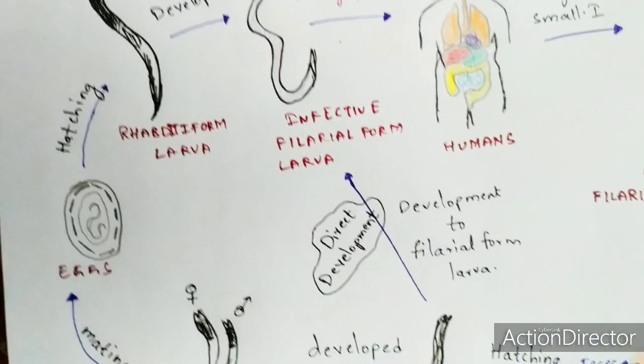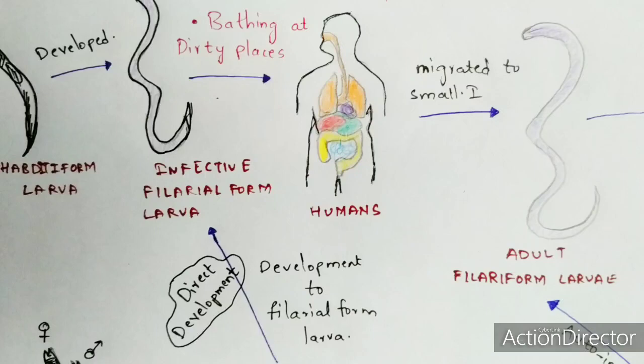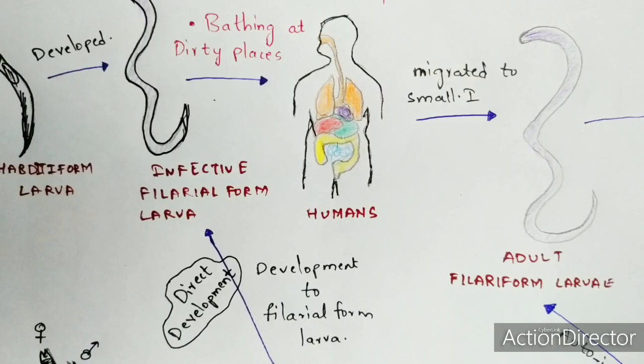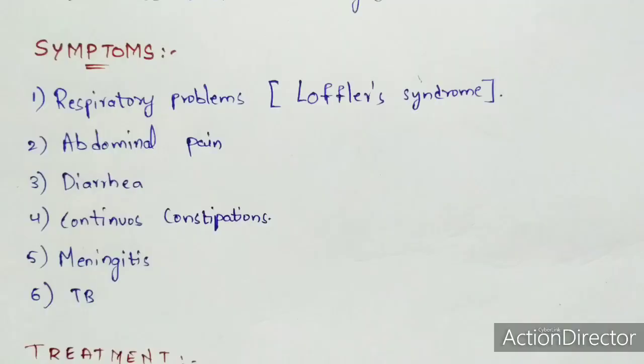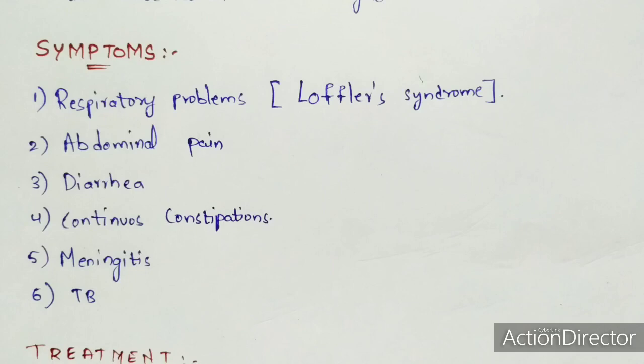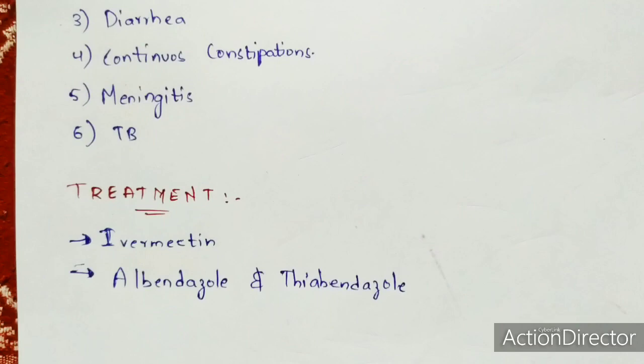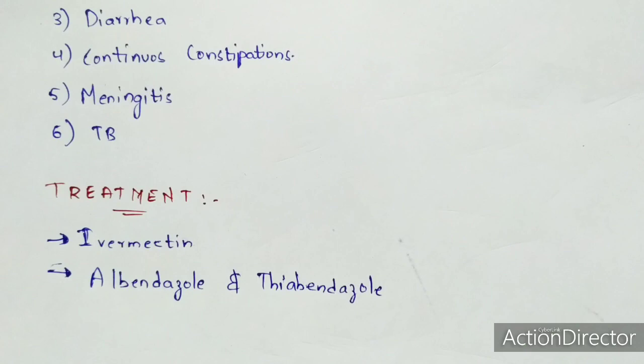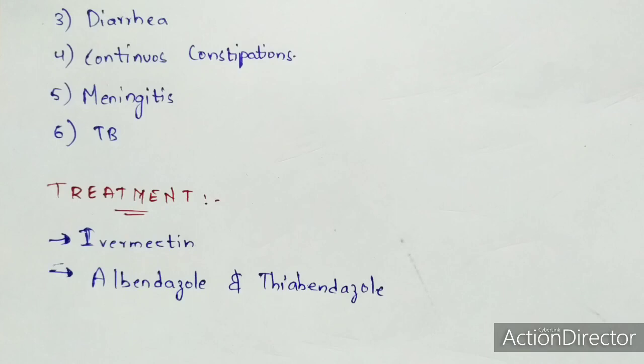Coming to the symptoms: respiratory problems such as Löffler's syndrome, abdominal pain, diarrhea, continuous constipation, meningitis, and tuberculosis. These are the normal symptoms seen in a person infected with Strongyloidiasis. Coming to the treatment: ivermectin, albendazole, and thiabendazole. Ivermectin plays a major role and can definitively cure Strongyloidiasis, while albendazole and thiabendazole are general anti-parasitic drugs.